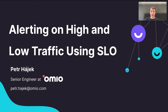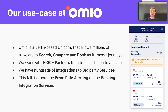Hi, I'm Peter Hayek and work as a senior engineer at Omeo. I will talk about alerting on high and low traffic using SLO. First, let me introduce our use case. Omeo is a Berlin-based unicorn that allows millions of travelers to search, compare, and book multimodal journeys. We work with more than 1,000 partners and have hundreds of integrations to third-party services. This talk is about error rate alerting on the booking integration services.